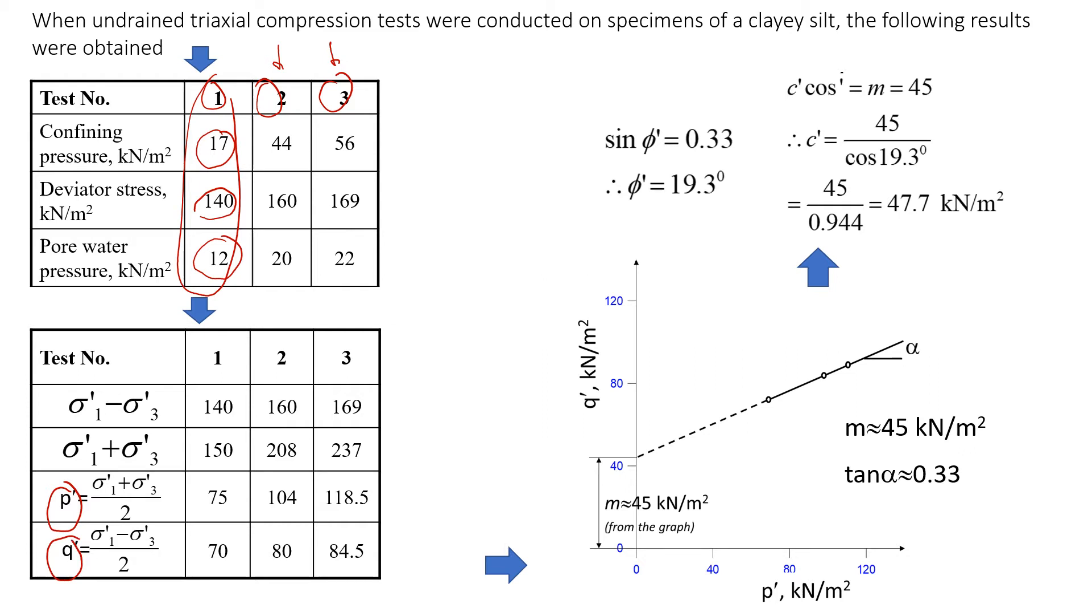It's called effective stress approach. We're going to use effective stress path. In this case we need to change total stress parameters to effective stress parameters. You may remember that effective stress parameter is total stress minus pore water pressure, and the same for the confining pressure. It will be sigma 3 minus pore water pressure.